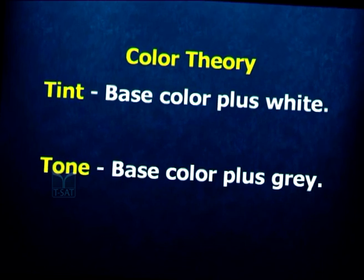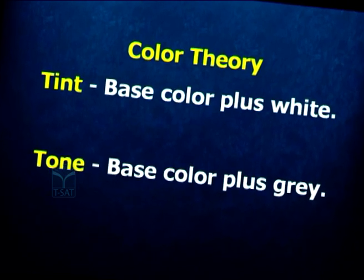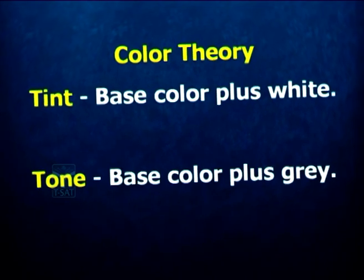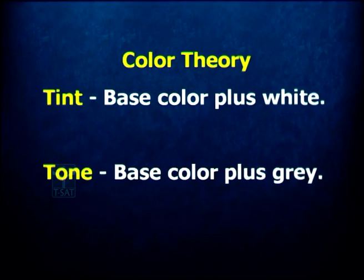You also have variations within color called tint. Tint is one of the variations of the hue. You get tint when you mix white to a color. For example, if you mix white to red, you get pink — pink is nothing but a tint of red. If you mix white to darker blue, you get a lighter blue, which we call the tint of blue.